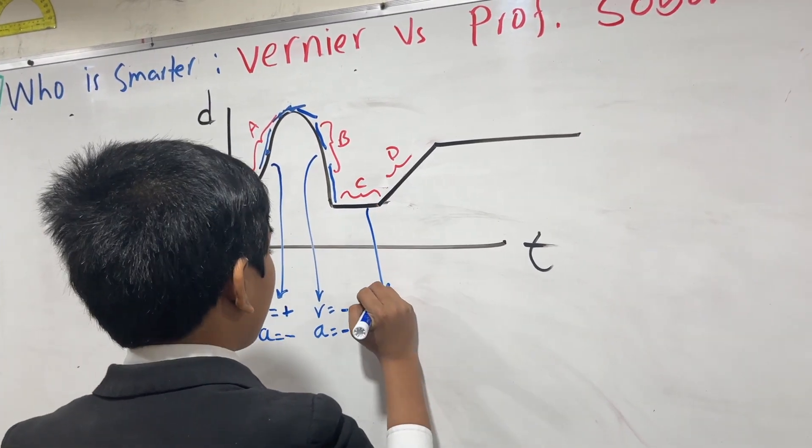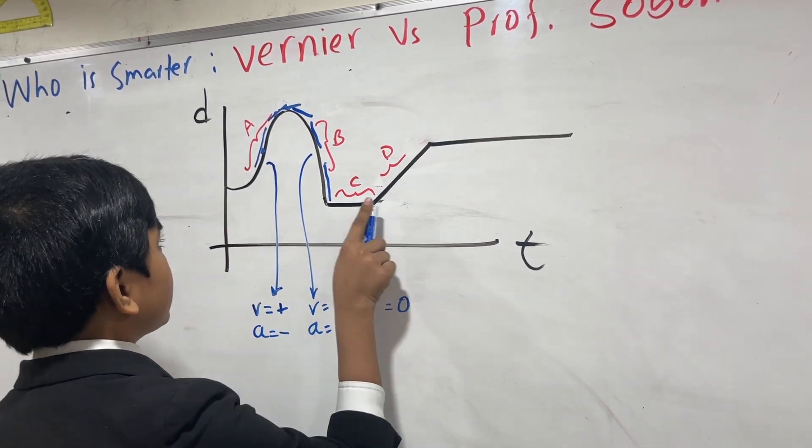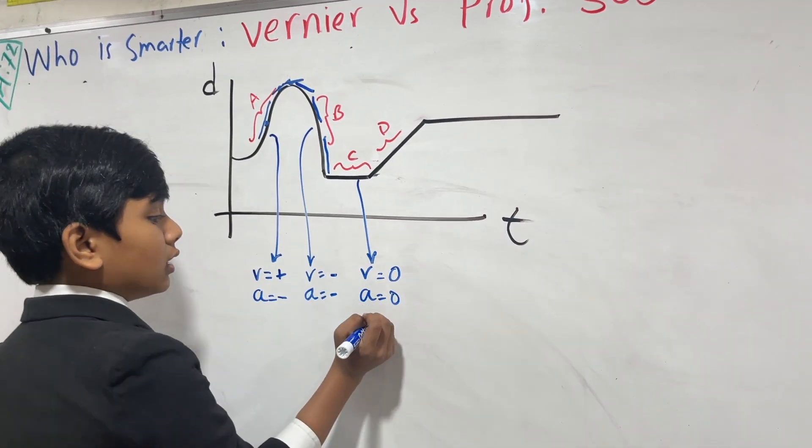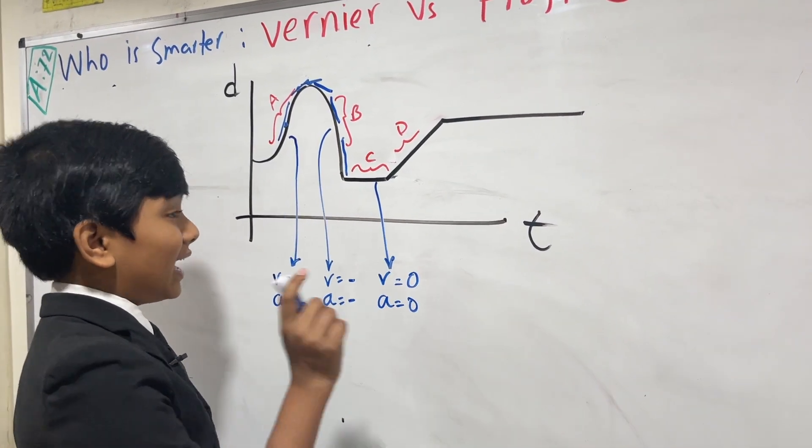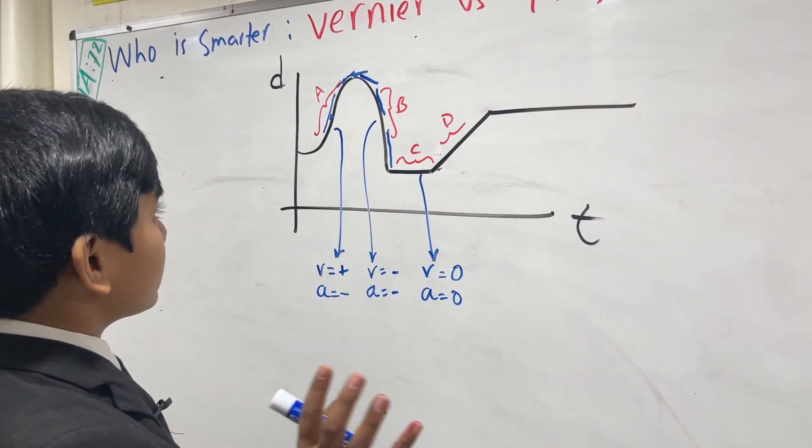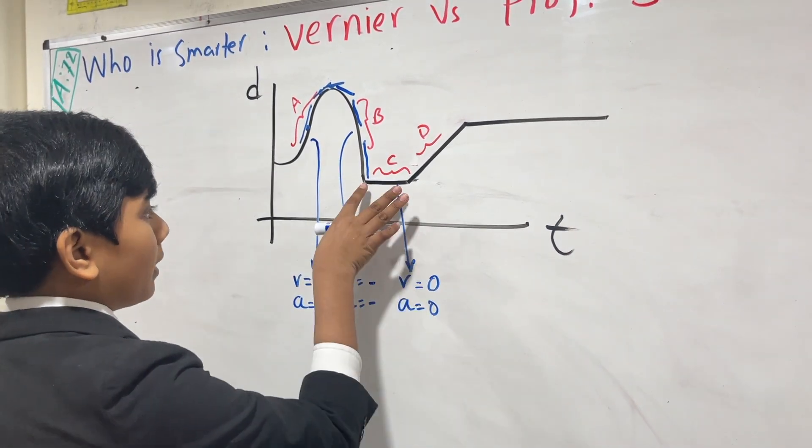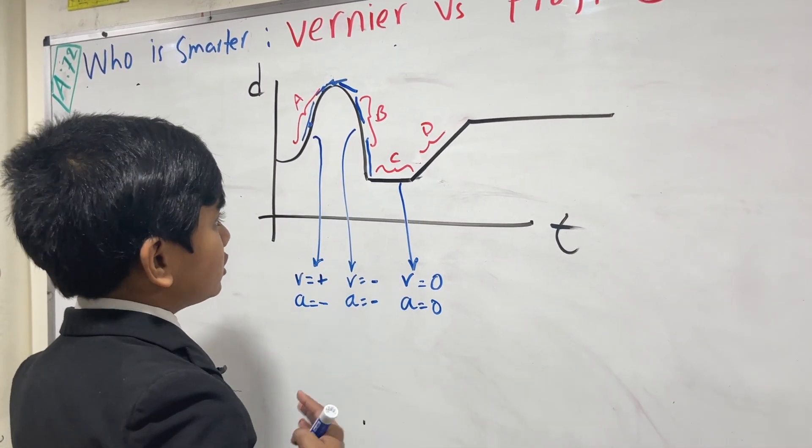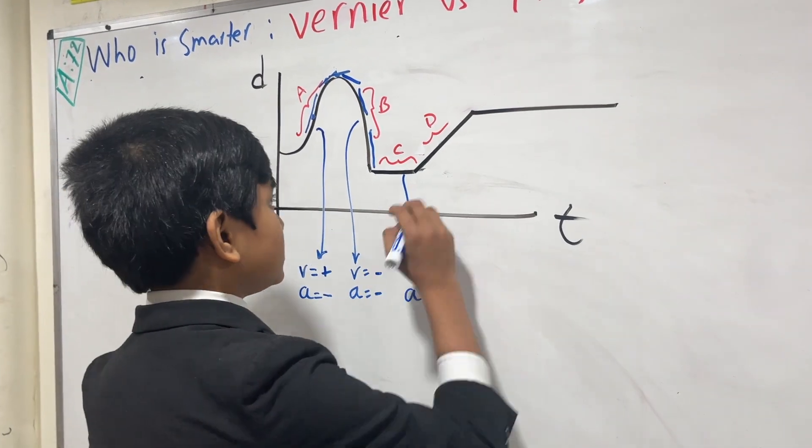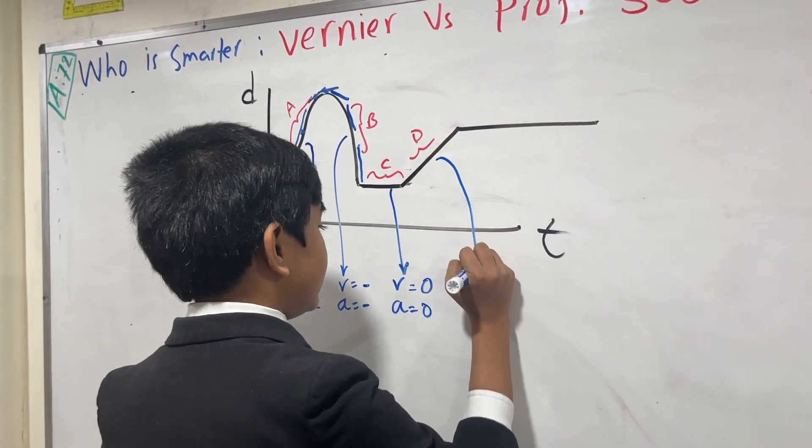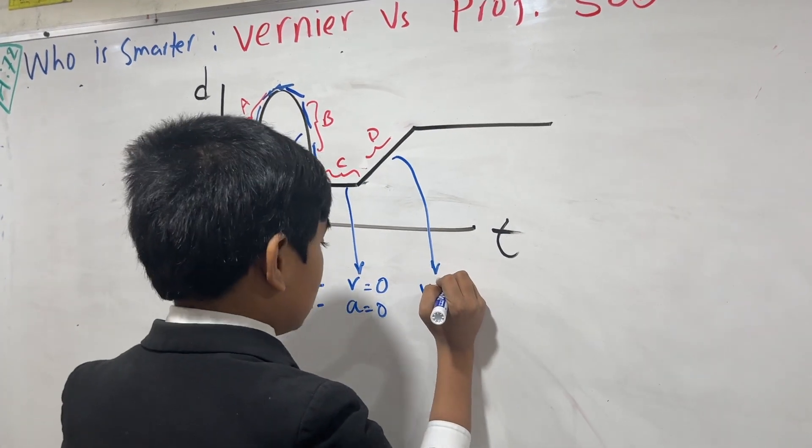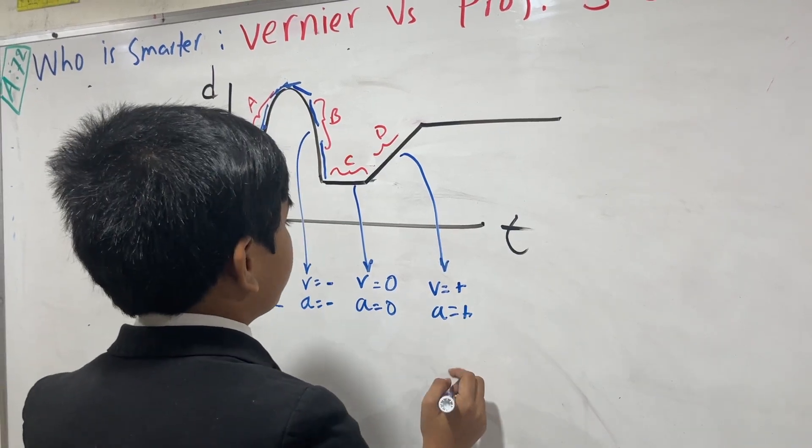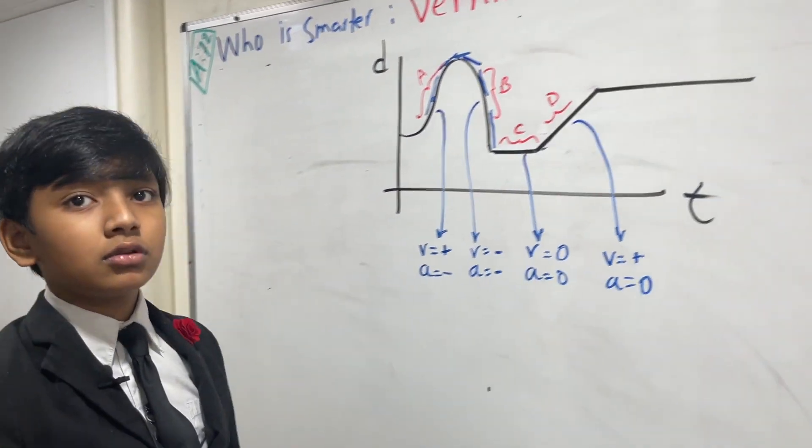What about C? Well, velocity is zero because there is no change in displacement, and acceleration is also zero because if velocity is zero, then actually no. If velocity is zero, then acceleration is not necessarily zero. But, here, since it's a straight section, velocity is zero, and there is no acceleration. Sorry. Over here, D, velocity is constant, but it's positive, and acceleration is also zero, actually. Acceleration is zero. Alright.